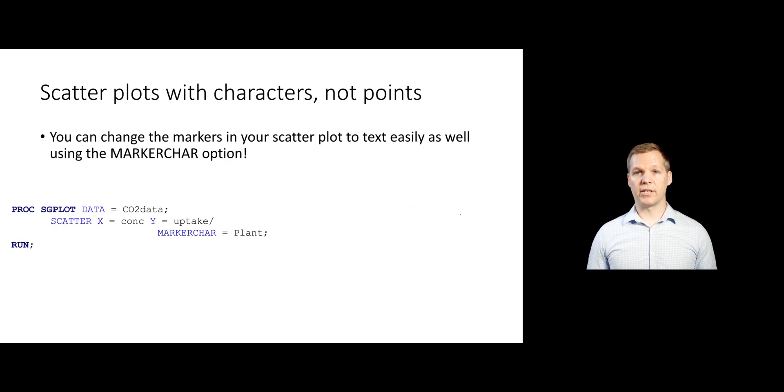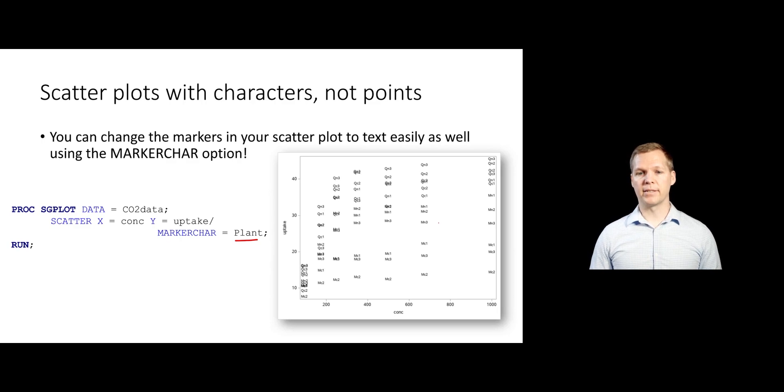We can also change the characters that you're seeing based off of a variable in your data set. So one variable in our data set was the plant variable, which specified which plant was created at or which plant the experiment was run at, I believe. And so if I just do marker char equal plant, when I plot this, I now see that the actual values that are plotted correspond to where these experiments were taking place.